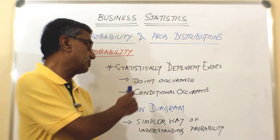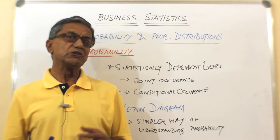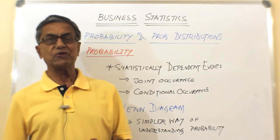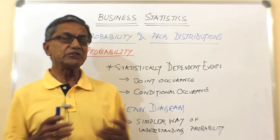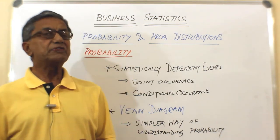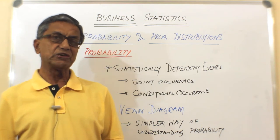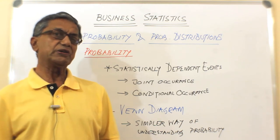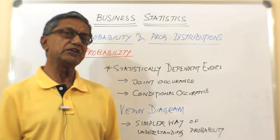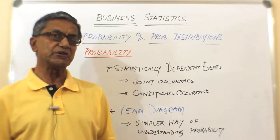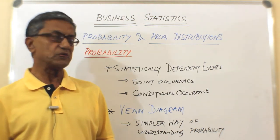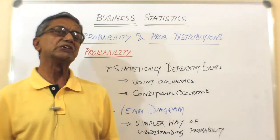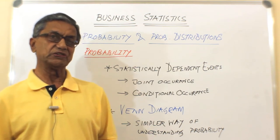We can give a number of examples for joint occurrence and conditional occurrence. Joint occurrence is two people coming to a cinema hall or two people going for a football match. An example for conditional occurrence could be reaching office by metro rail, where reaching the office depends on the metro rail coming into the station on time. Another example is a surgeon waiting for the anesthetist to come to start the surgery — unless the anesthetist is there, the surgery cannot start.